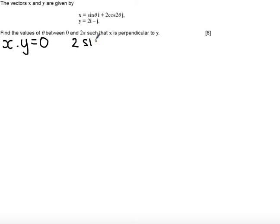notice that I don't include the i, will give me 2 sin theta. Minus 1 times 2 cos 2 theta gives me minus 2 cos 2 theta, all equal to 0.